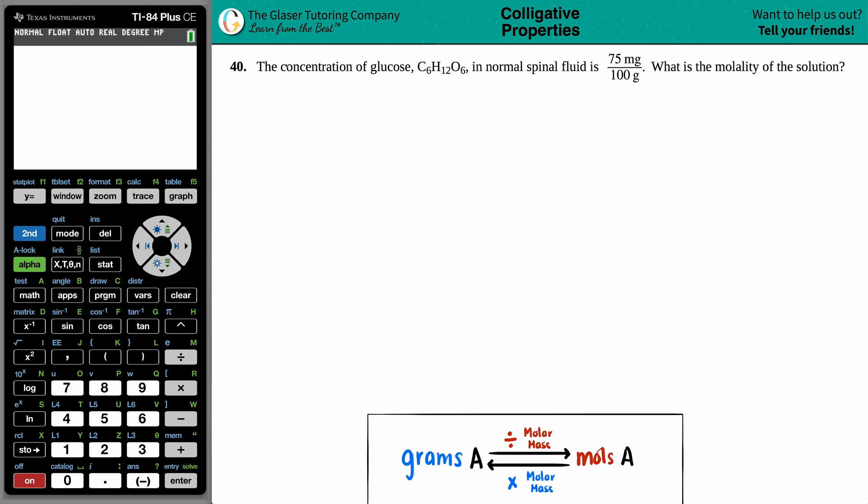Number 40. The concentration of glucose, C6H12O6, in normal spinal fluid is 75 milligrams per 100 grams. What is the molality of the solution?